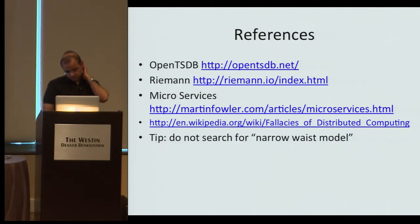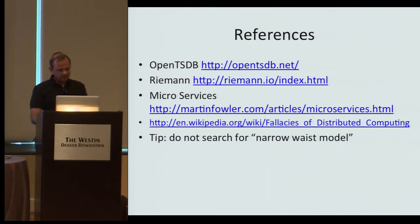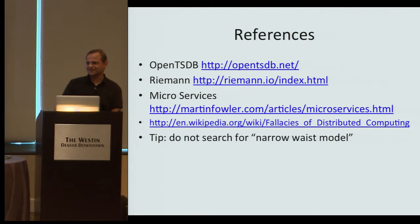Here are some references. I'd recommend Martin Fowler's blog on microservices, and before you code up a separate service, read the Fallacies of Distributed Computing. As a programmer you assume the network is always reliable and packets arrive in finite time — that never happens, or happens 99% of the time, and you have to write code for the other 1%. And don't search for the narrow-waist model on Google, at least not at work. Any questions?